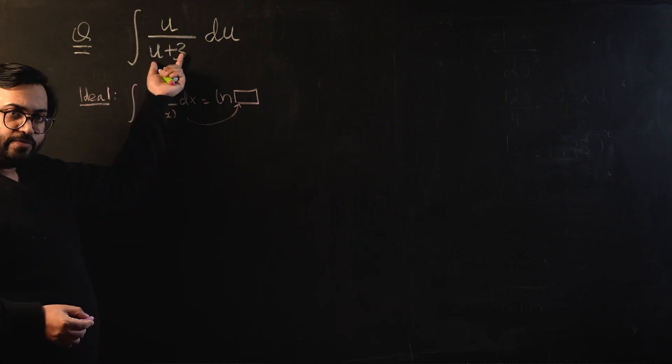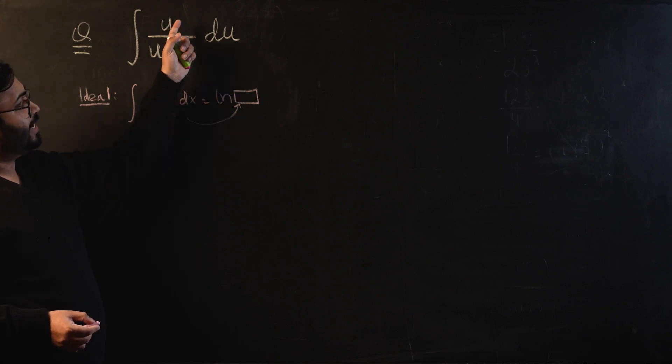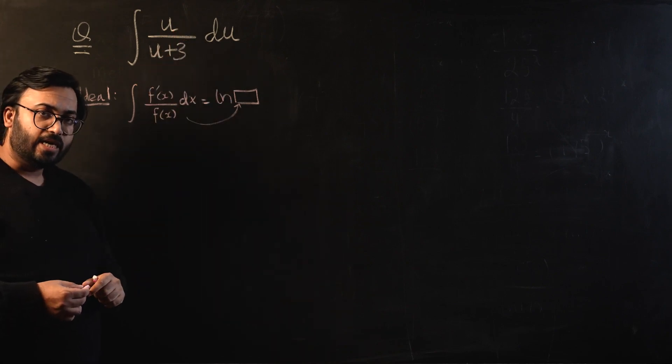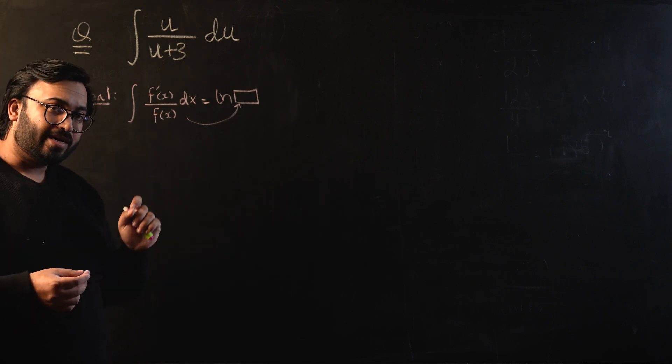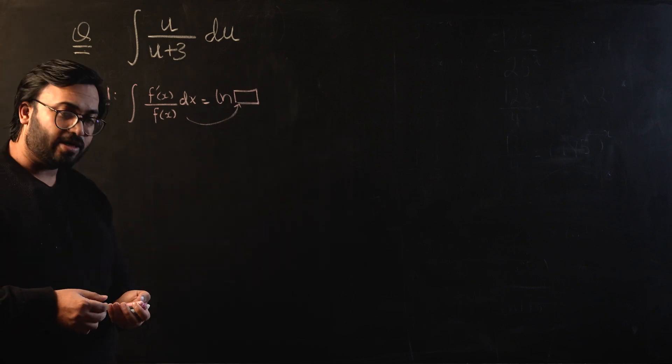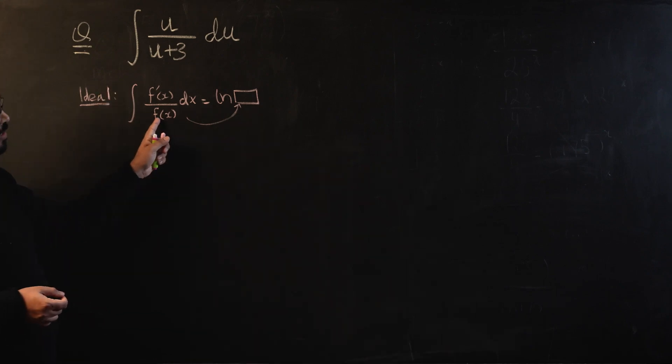This idea can't really be worked over here because if you take u+3 as denominator, the problem that we are going to have is that the differentiation will become 1. In the numerator you do not have 1, you already have u, and you are not able to get rid of that u because you are not allowed to introduce or remove variables in an integral sign.